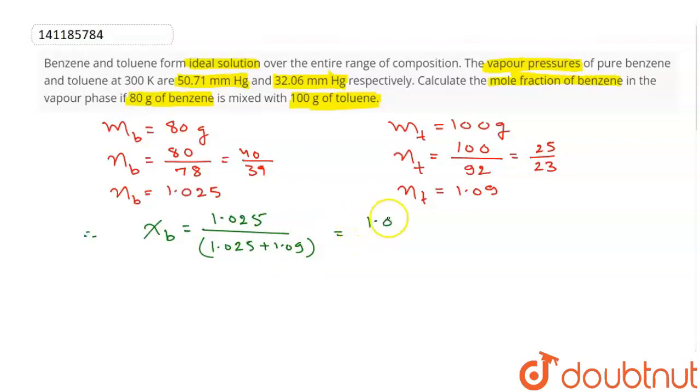What is mole fraction of benzene? Benzene has these many moles out of total 1.025 plus 1.09. The mole fraction of benzene is 1.025 divided by 2.115.